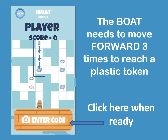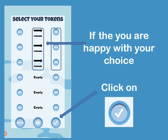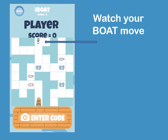When you're ready to enter your code, click at the bottom. On the next screen, you have the option of toggling between different commands, so you toggle until you have three move forwards. Once you are happy with your choice, you can click on the tick in the bottom right-hand corner and watch your boat move.